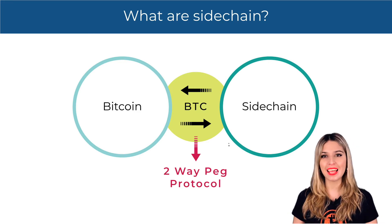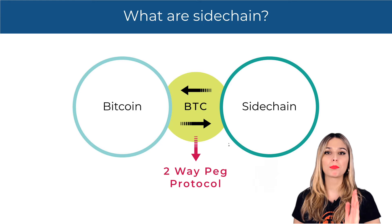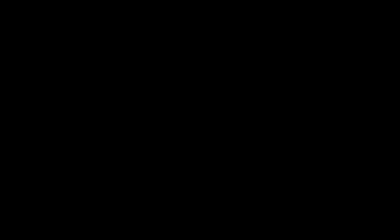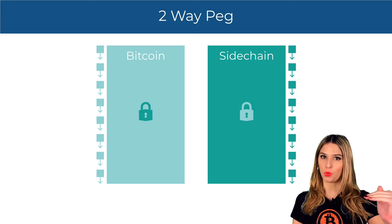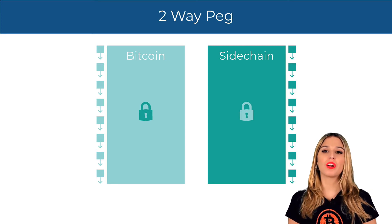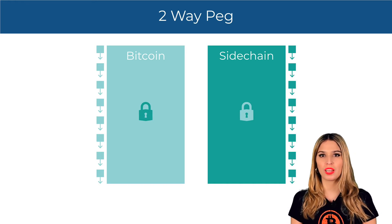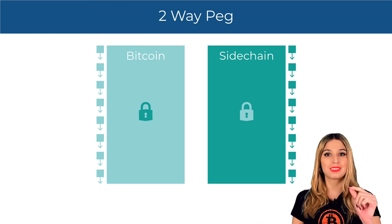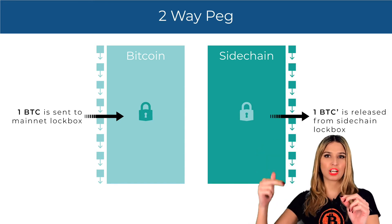A sidechain is a separate blockchain that is pegged to the Bitcoin main chain via a two-way peg protocol in the middle. The two-way peg protocol allows us to send cryptocurrencies from the main blockchain (layer one) to the secondary blockchain (layer two). However, no cryptocurrencies are actually transferred — this is just an illusion. Whenever I want to send a certain amount of bitcoins to the secondary blockchain, those bitcoins are going to be temporarily locked while the equivalent amount of coins are unlocked or released in the secondary blockchain.